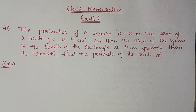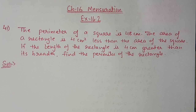Hello students, we are doing Chapter 16 Mensuration, Exercise 16.2. In today's video we will start from Question 41. The question is: the perimeter of a square is 48 centimeters, the area of a rectangle is 4 centimeter square less than the area of the square. If the length of the rectangle is 4 centimeters greater than its breadth, find the perimeter of the rectangle.